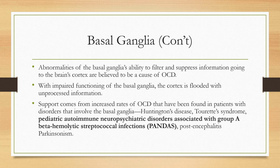With impaired functioning of the basal ganglia, the cortex may be flooded with unprocessed information. Support comes from increased rates of OCD found in patients with disorders involving the basal ganglia, including Huntington's disease, Tourette's syndrome, pediatric autoimmune neuropsychiatric disorders associated with group A beta-hemolytic streptococcal infections — otherwise known as PANDAS — and post-encephalitis Parkinsonism.